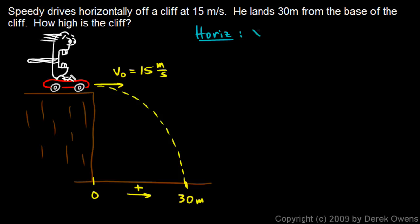I know that the initial position is 0, the final position is 30, and I know that the acceleration is 0. Because in a projectile problem, the only acceleration is due to gravity, and gravity is down. So there's vertical acceleration but there's no horizontal acceleration. And I also know the initial velocity is 15 meters per second because that was given.